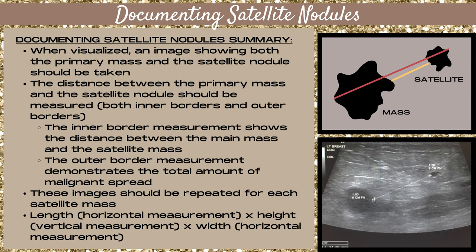It's not important which scanning planes you take your measurements from. You can take two measurements in antiradial and one in radial, or do the opposite, as long as you've covered all three measurements. You want a length measurement, which is your horizontal measurement, a height measurement, which is your vertical measurement, and a width measurement, which is also a horizontal measurement. The biggest mistake new sonographers make is taking two height measurements — two vertical measurements. Always ensure you have two horizontal measurements and one vertical measurement when measuring masses.